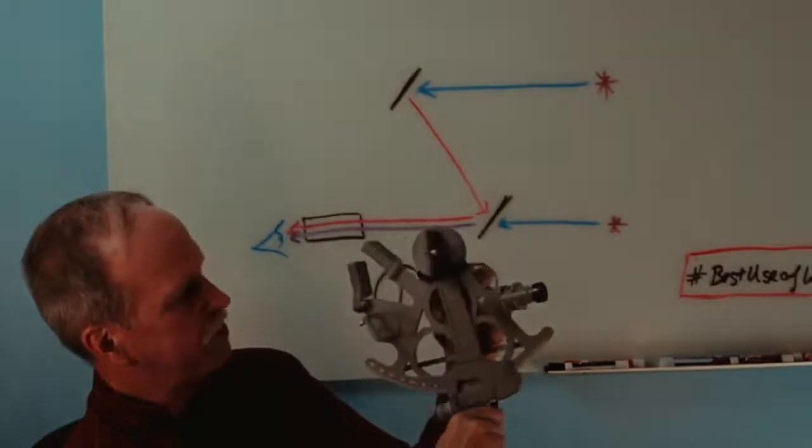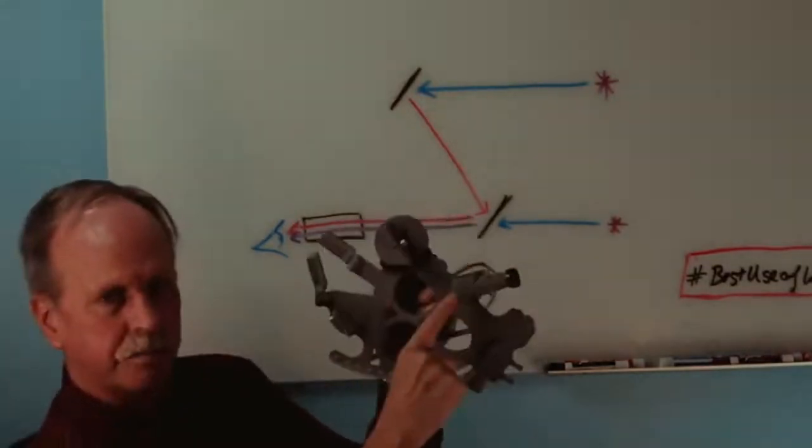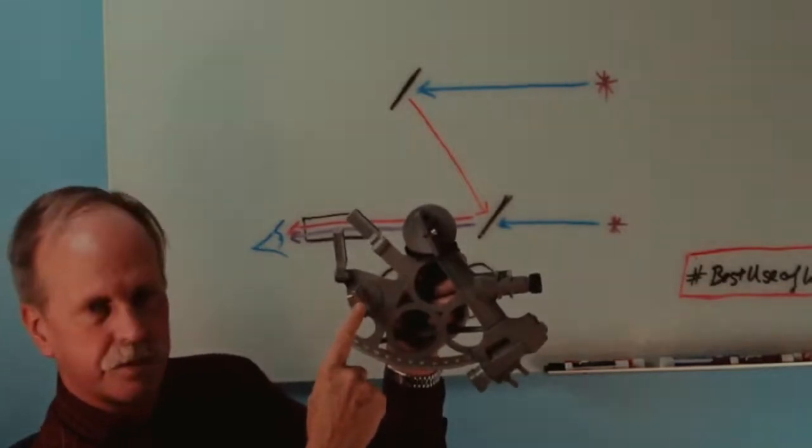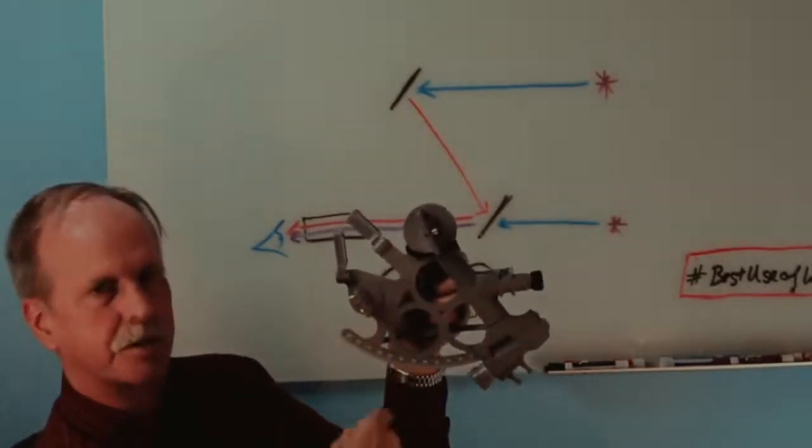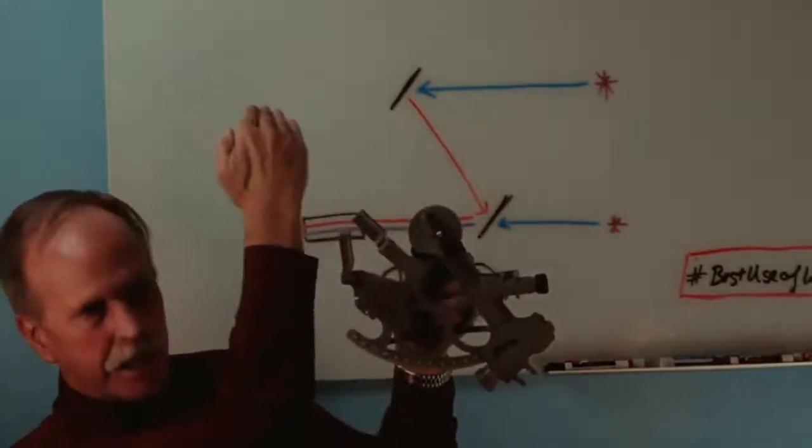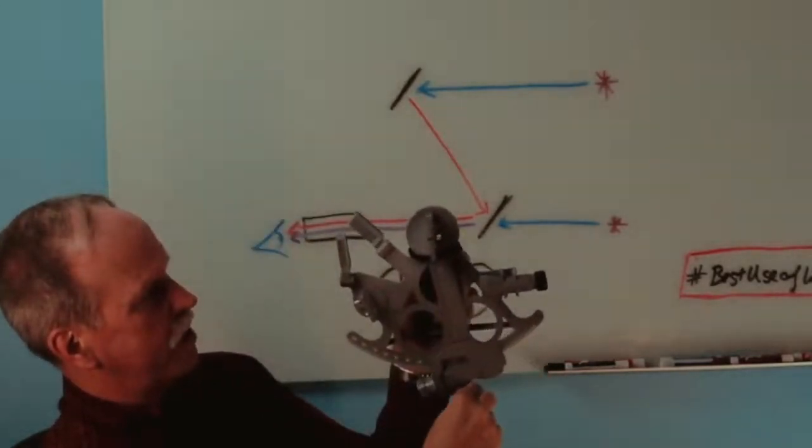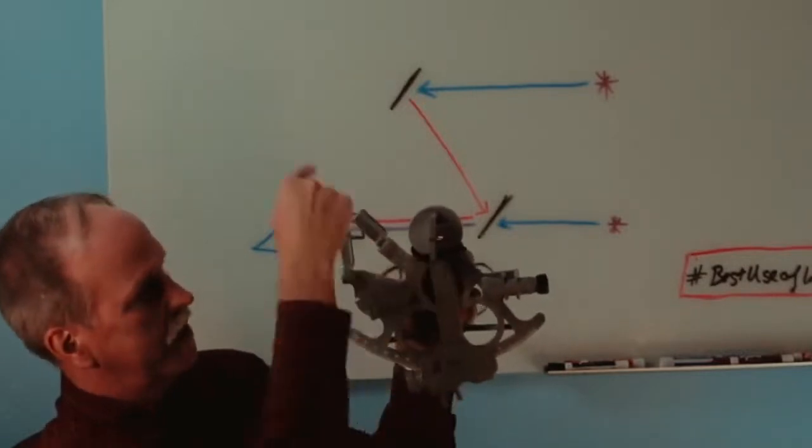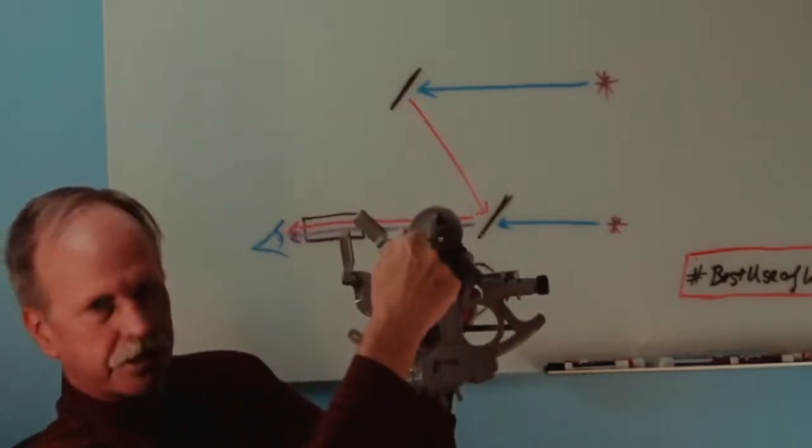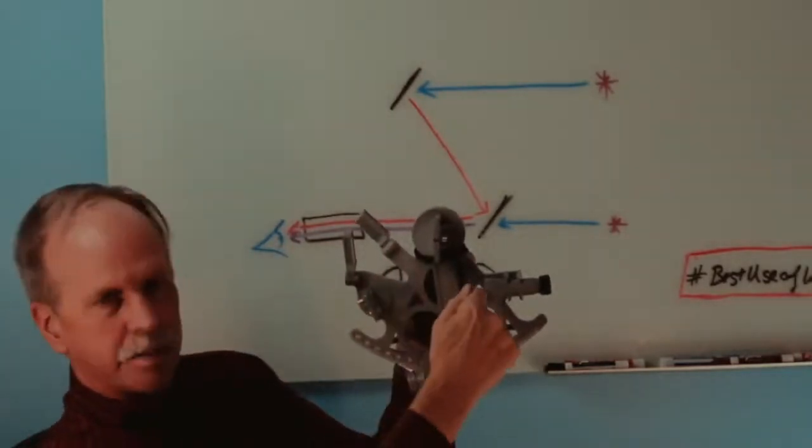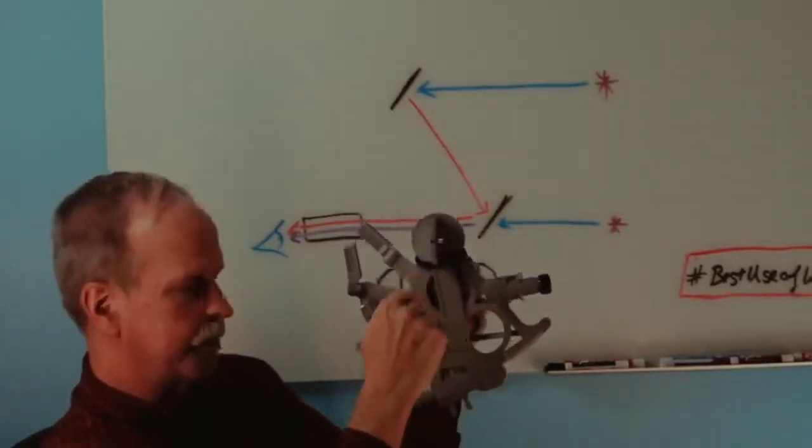Now, what happens with this? Say you're looking at the horizon of the ocean through the telescope and through this window on this partially silvered mirror. If you want to look at an object that's up in the sky, what you have to do is you have to bring this arm up until that object is reflected through this mirror, down to this mirror, and then back to your telescope. Let me show you what that looks like.